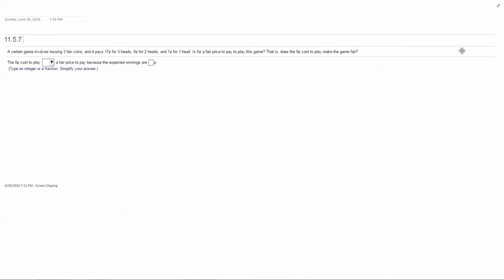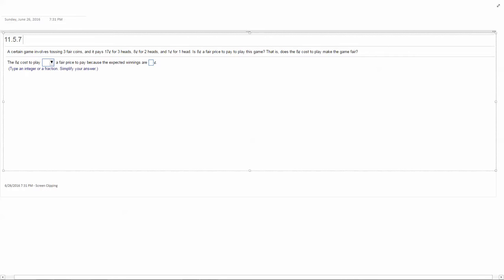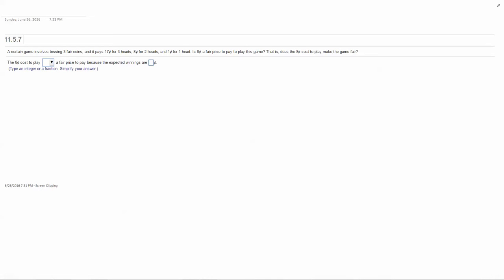So in order for it to make the game fair, then our expected value when we compute that would be zero. So we're going to set up an expectation table where we list all of the outcomes and the probability for each outcome to occur. The first thing we need to do is identify the total sample space, the total outcomes when we toss 3 coins.